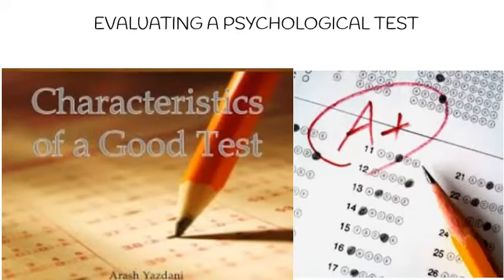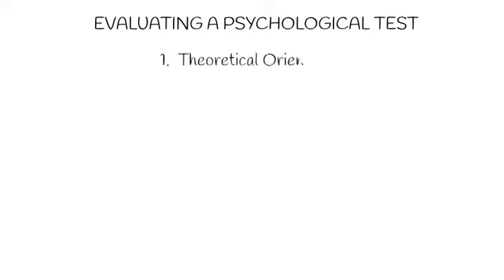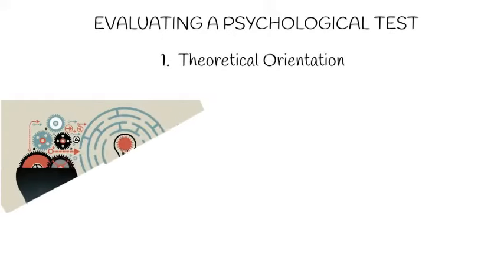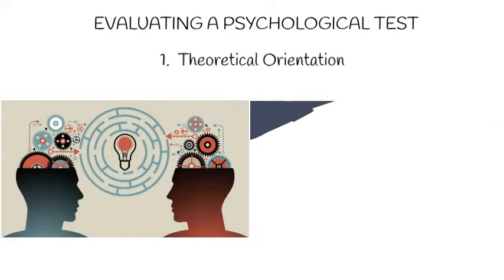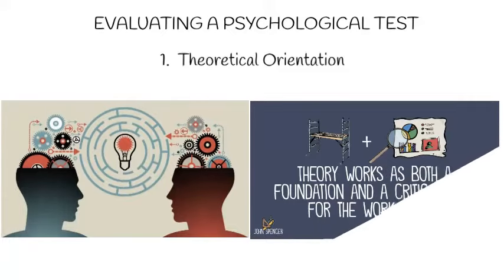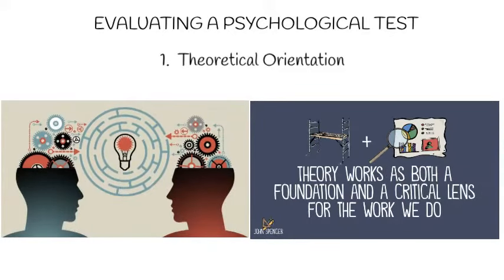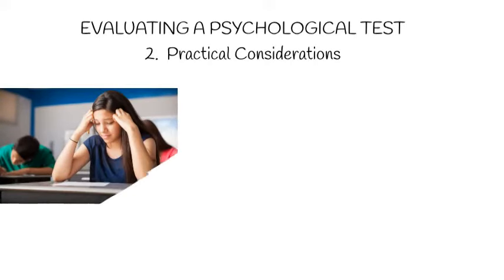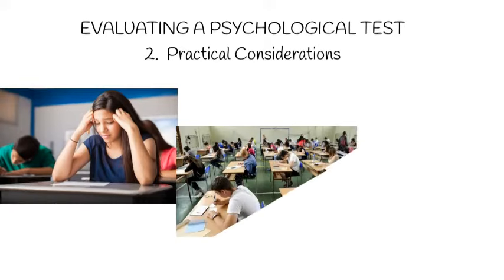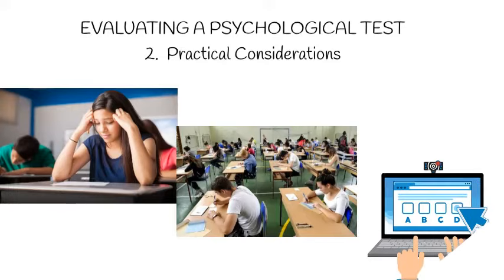The last part of this overview is about evaluating a psychological test. The first thing to consider is its theoretical orientation — we must research the construct that the test is supposed to be measuring, then examine the process the test uses to measure that construct. The second thing to consider is its usefulness. If a test is too long, test takers may become so frustrated that their answers invalidate the results. Other factors such as reading level and culturally biased items may also make it less useful.